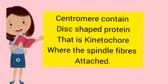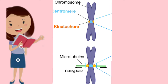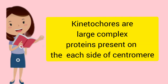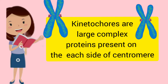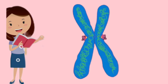Centromere contains disc-shaped protein that is the kinetochore, where the spindle fibers attach. You can see in this picture the centromere and kinetochore. Kinetochores are large complex proteins on each side of the centromere. Kinetochores have three parts, each of them playing an important role.